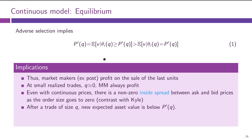Looking at the formulas: in Kyle's model, the price the dealer sets for an order of size Q is the conditional expectation E[V | order size = Q]. In the Glosten model, the marginal price for the Q-th unit is given by E[V | trade size ≥ Q]. That's an important difference between dealer markets and order-driven markets.